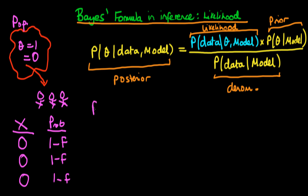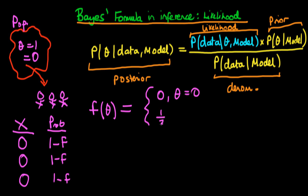Furthermore, F depends on theta quite obviously. If they come from a tribe which doesn't have the disease at all, the probability of an individual being infected is zero — that's the case when theta equals zero. Prior experience tells us that if they come from a tribe which does have the disease present, the probability is one half. Let's use all of this information to derive the likelihood.